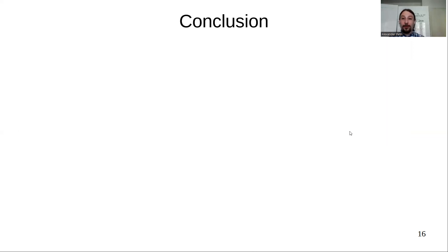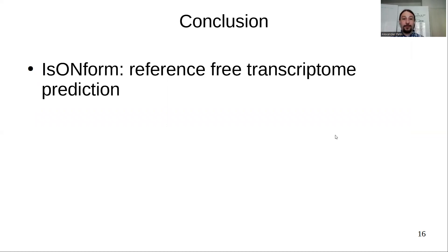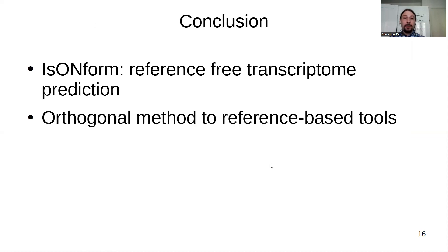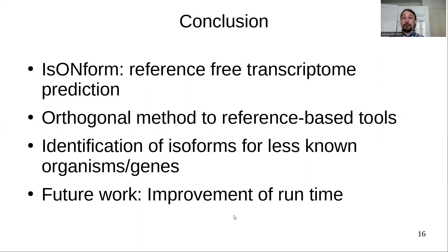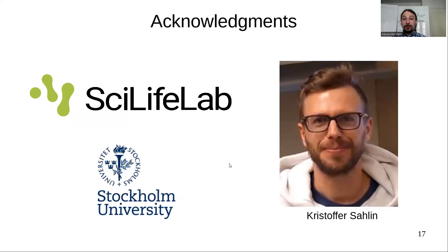To conclude: I introduced IsoNForm, a tool for reference-free transcriptome prediction. We believe IsoNForm may be very suitable as an orthogonal method to reference-based tools, given the discrepancies between tools found by the LRGAS consortium. IsoNForm is also well-suited for identifying isoforms in less well-known organisms or genes. As future work, we want to improve the runtime and have already started doing so since publication. I want to thank my supervisor Christopher Salin, my home university, and ScilifeLab. I'm happy to take any questions.